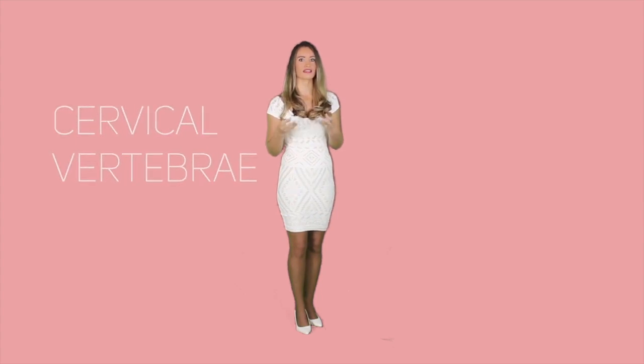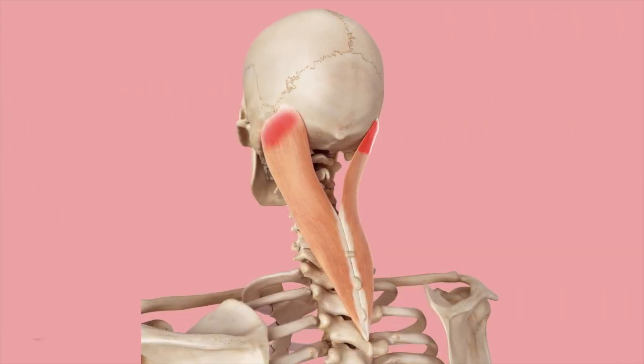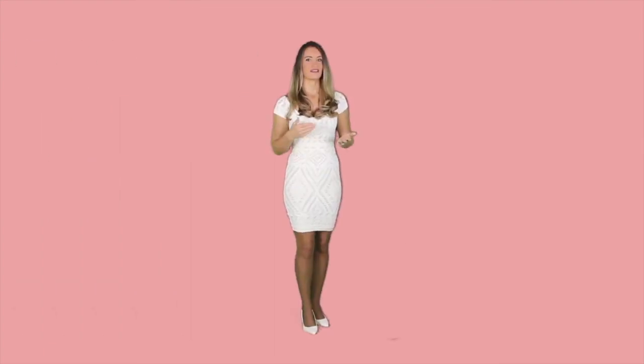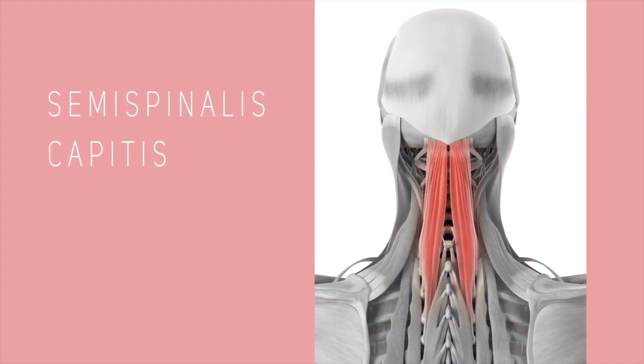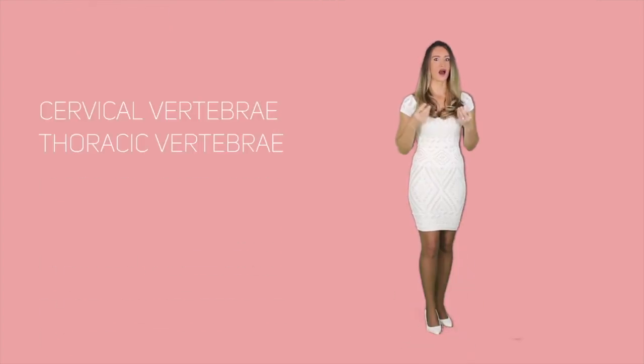Apart from the sternocleidomastoid muscle, which arises and runs anteriorly, there are numerous muscles that arise posteriorly to the cervical vertebrae and extend up to the neck. The first of these is the splenius capitis, which appears like a strap located posterior to the neck and links the underside of the skull to the vertebral bones of the neck and the upper thorax. Its contraction causes strong head rotations, enabling the head to bend from side to side. The semispinalis capitis is the second muscle, broad and flat like a sheet, originating from the cervical and thoracic vertebrae up to the occipital bone. Its contraction causes head extension and causes the head to rotate and bend to one side.